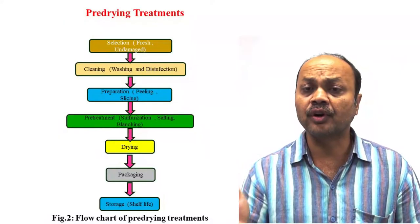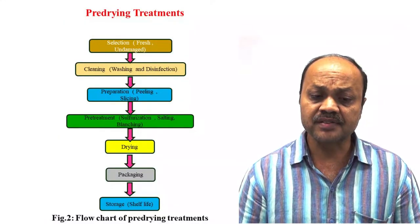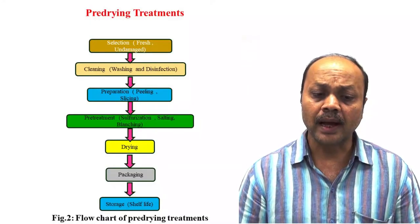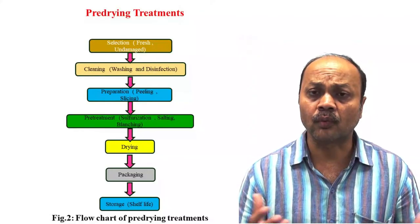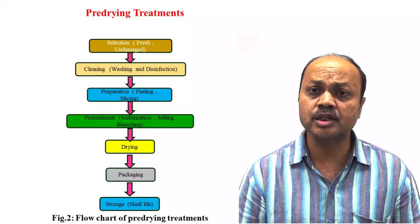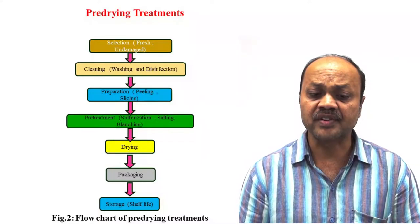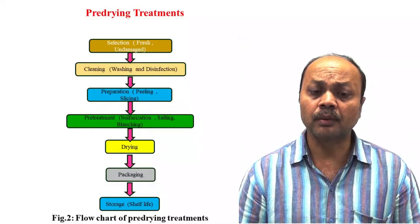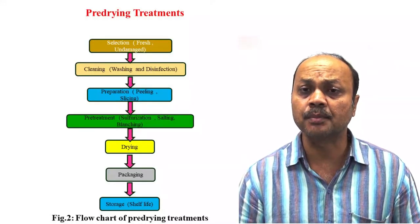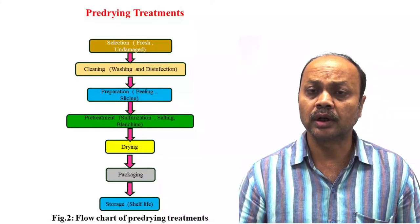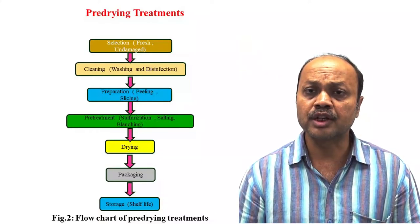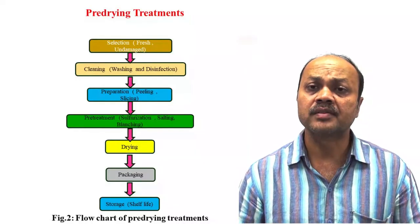Before going for drying, we go for pre-treatments. This is the flow chart. First we select the produce and normally go for grading or sorting — sorting means removing damaged product. After that you go for cleaning, which includes water washing and different types of sanitizers to reduce the bacterial load on the surface. After that you go for peeling and slicing. Then various types of pre-treatments — physical methods and chemical methods. Then we go for drying, and after that, packaging. Depending on which type of product you are talking about — milk powder or dehydrated tomato — the packaging requirement will be different. Finally it will be stored and transported to the destination, whether a retail shop or some further processing facility.